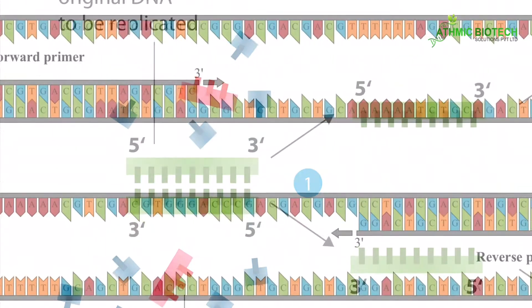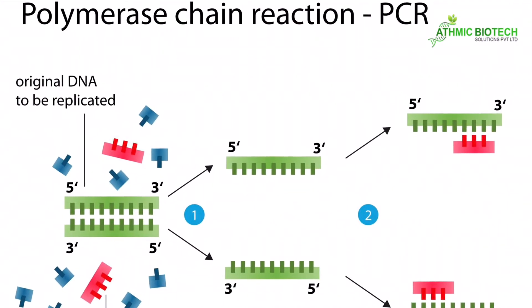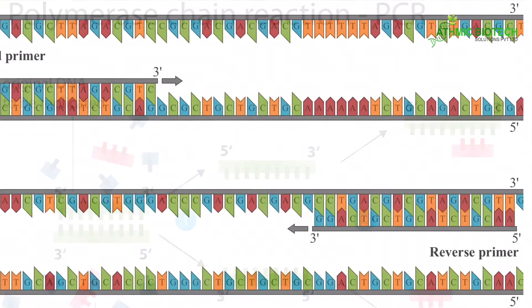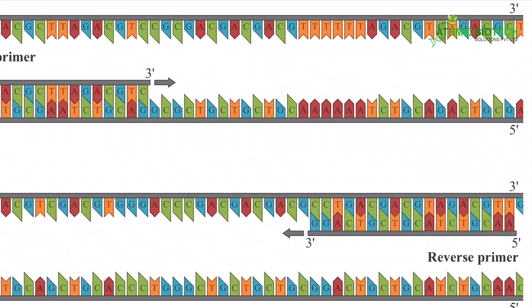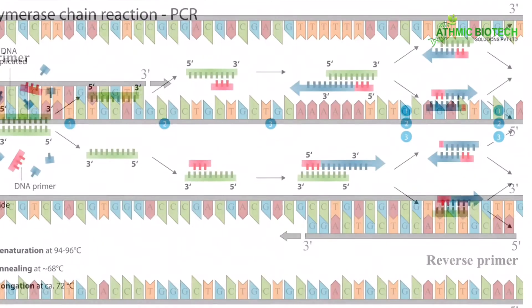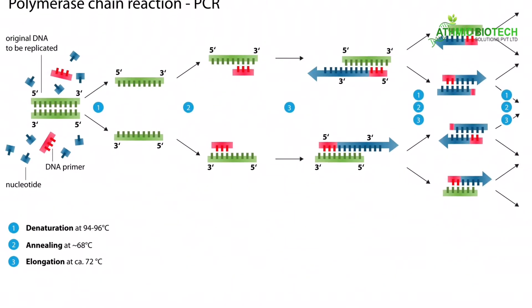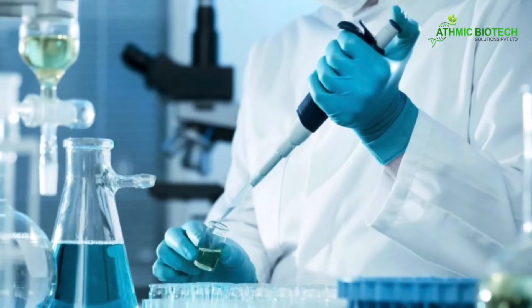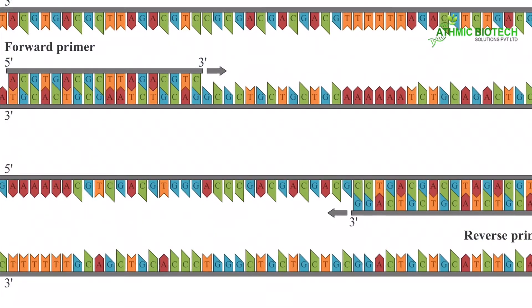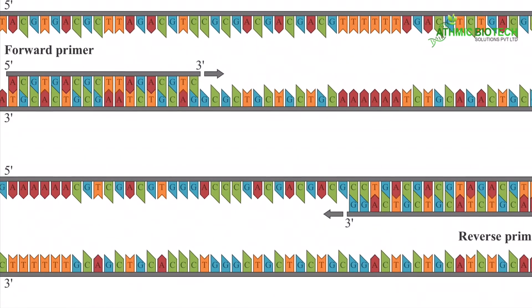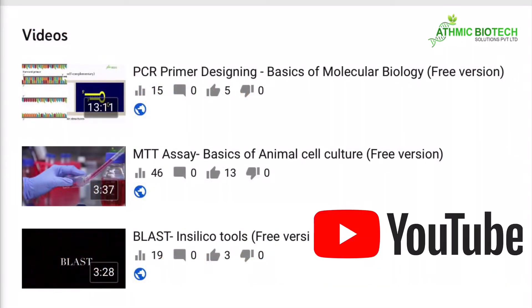Second step is primer annealing. Here the forward and reverse primers will go and bind to your template DNA as shown in the figure. In between the forward and reverse primer is your gene of interest or DNA of interest. Primers will go and bind to their complementary sequence on both strands. Primer annealing temperature varies based on the primer. How to calculate that primer annealing temperature will be discussed in our previous presentation on primer designing tools.